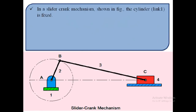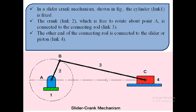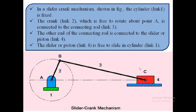In a slider crank mechanism as shown in the figure, the cylinder (link 1) is fixed. The crank (link 2), which is free to rotate about point A, is connected to the connecting rod (link 3). The other end of the connecting rod is connected to the slider or piston (link 4), which is free to slide in the cylinder (link 1).